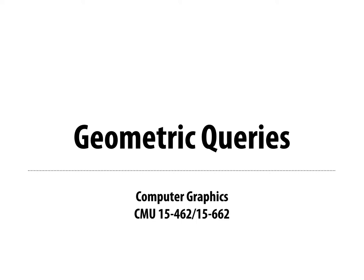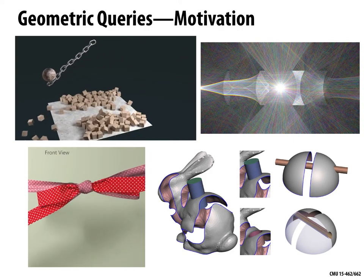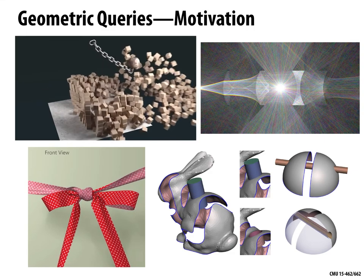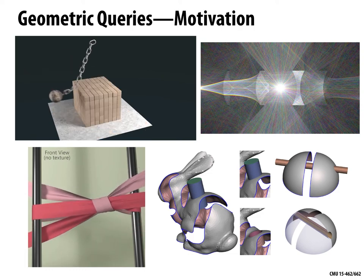Welcome back to CMU 15-462 Computer Graphics. Today we're going to be talking about geometric queries. In the last few lectures we were talking about geometry in general — different kinds of representations, implicit versus explicit — and getting into mesh data structures and geometry processing. Today we want to talk more about how we answer specific queries about geometry, things like the distance to a point or the intersection with a ray. These kinds of queries show up all across computer graphics, whether you're doing animation, rendering, or geometry processing.